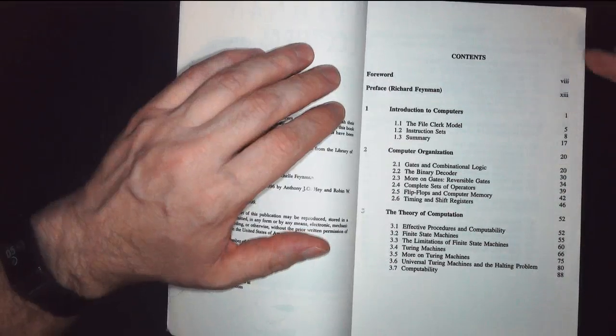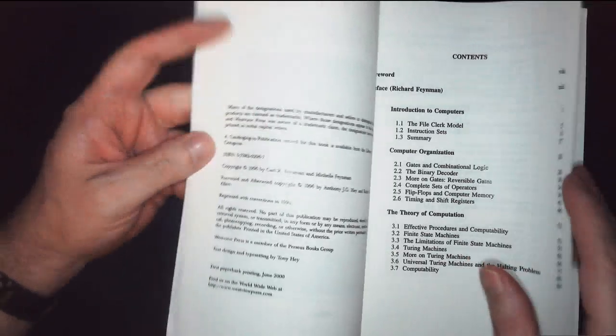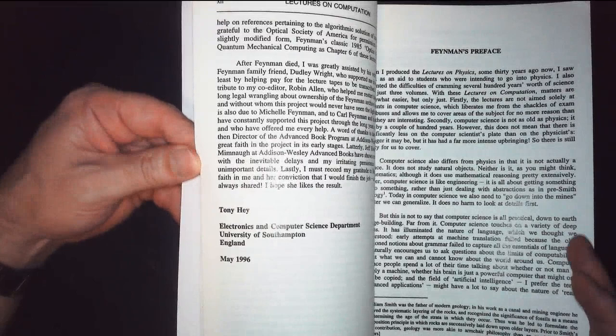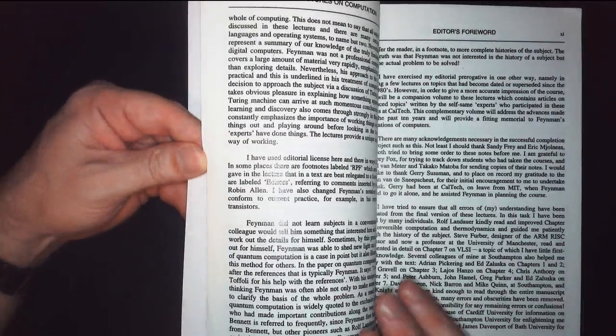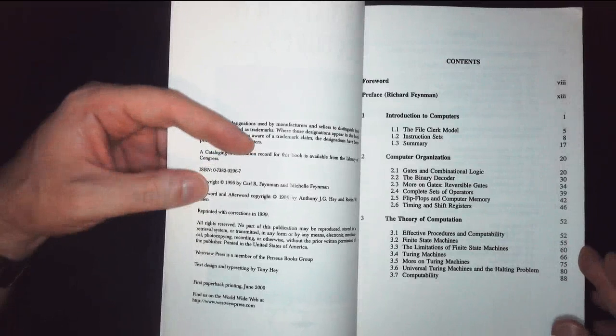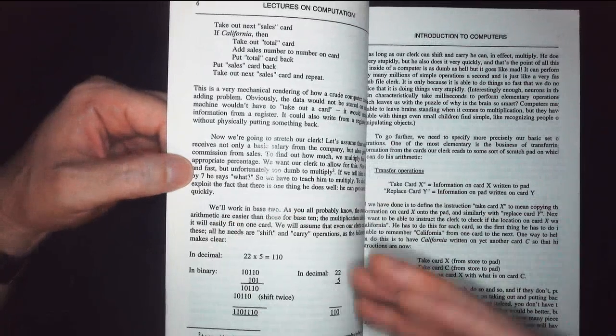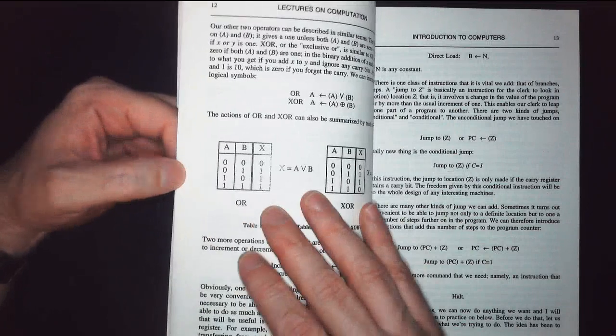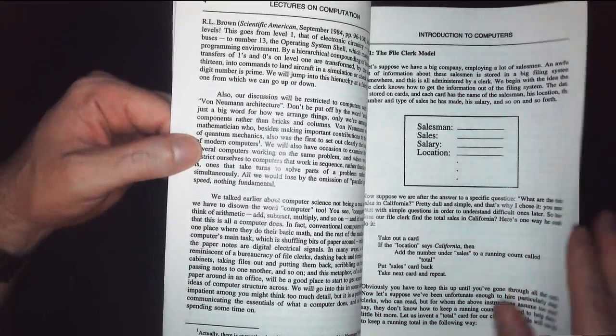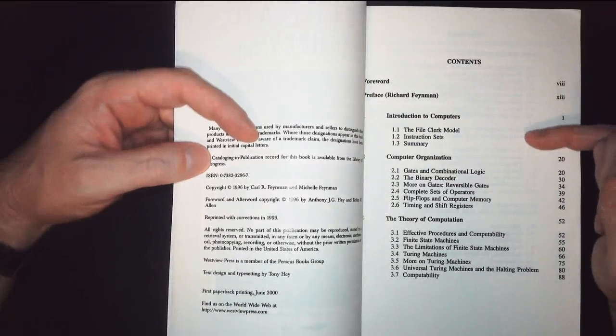First he just gives an introduction to computers. This was in 1987, so this was still pretty early on. I mean, I had a computer. I was sitting around programming a computer that my dad had bought for work at this point. I was a precocious 10 year old. But still, computers were sort of a novelty at that point. You see that he's going through his file clerk model. Basically, you're sitting here filing information. And then here's a set of instructions and stuff like that. So it's basically just talking about what a computer does when you use it.